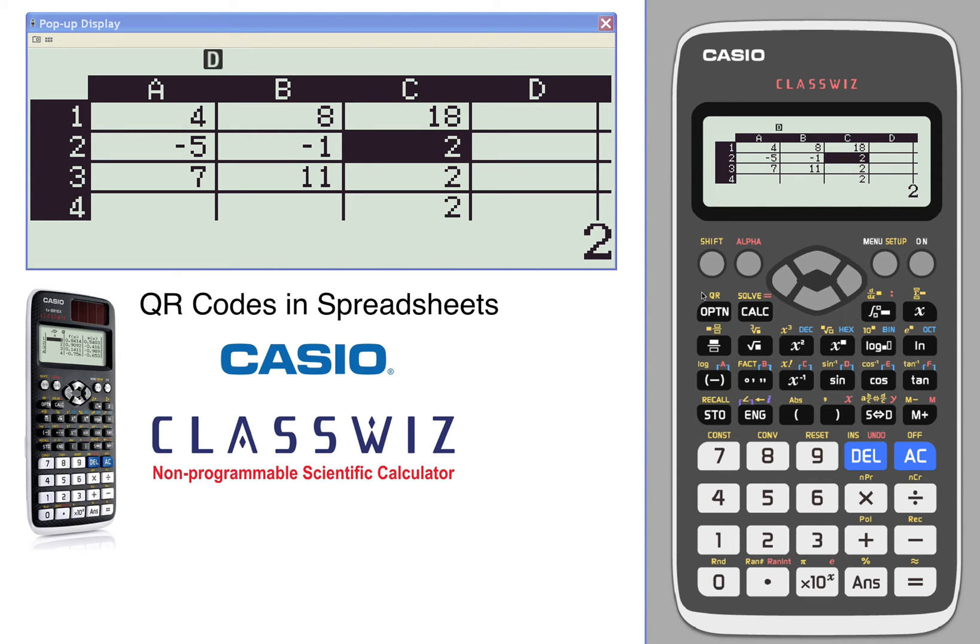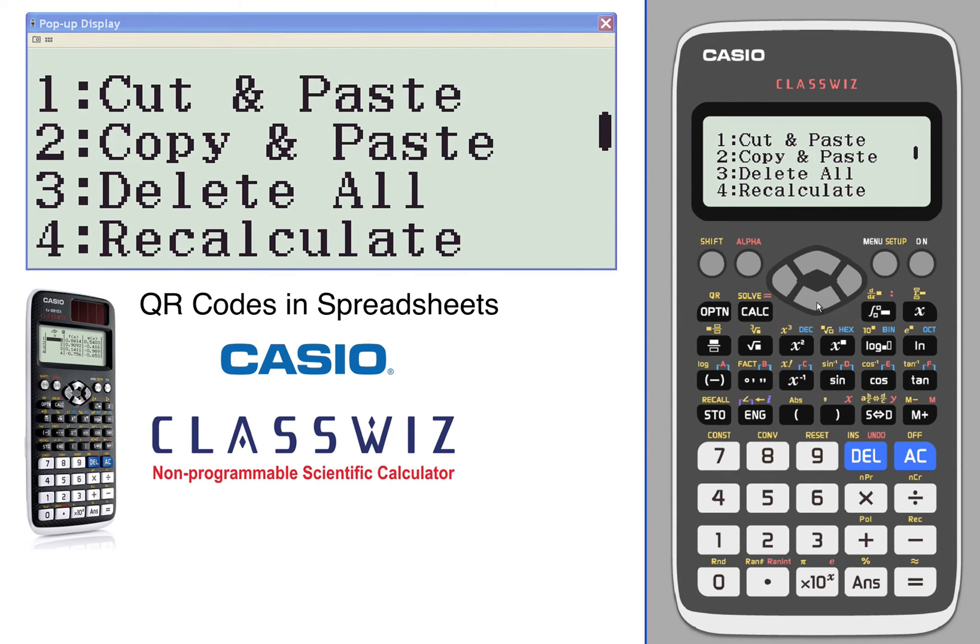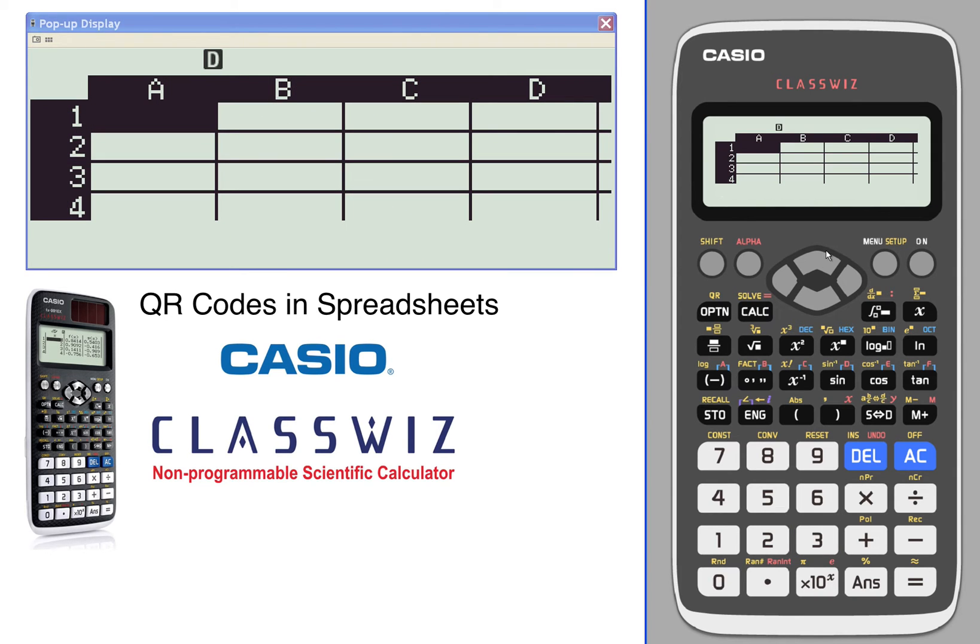Using QR codes and spreadsheets. We're currently in the spreadsheet so let's clear out the spreadsheet. Go into option, press number three after we toggle down which will delete all and give us a brand new spreadsheet.